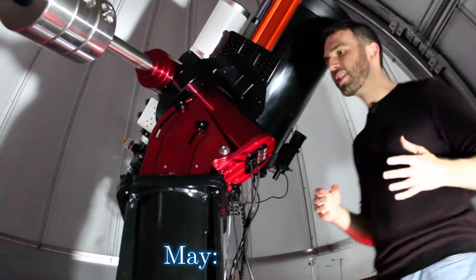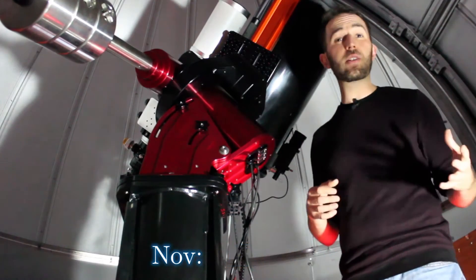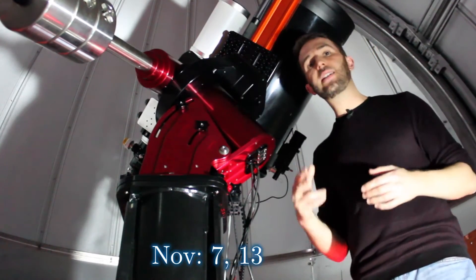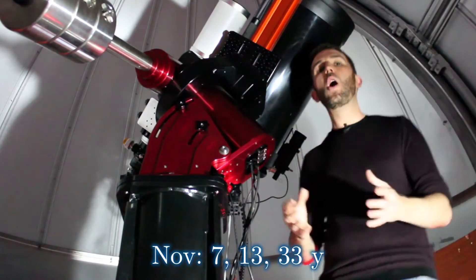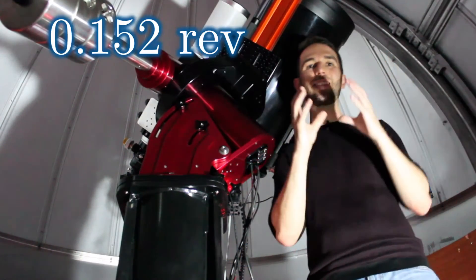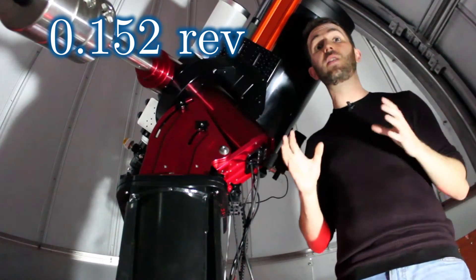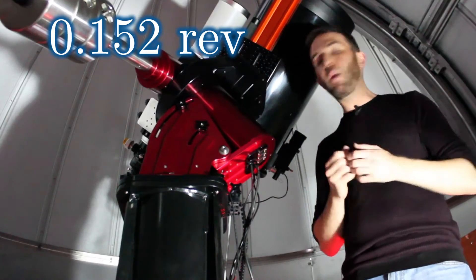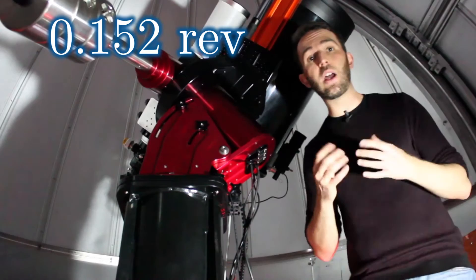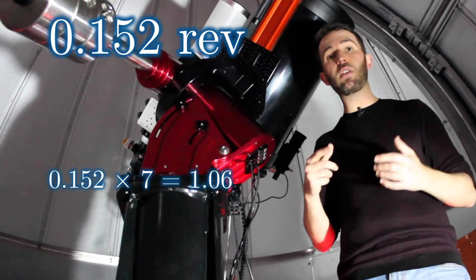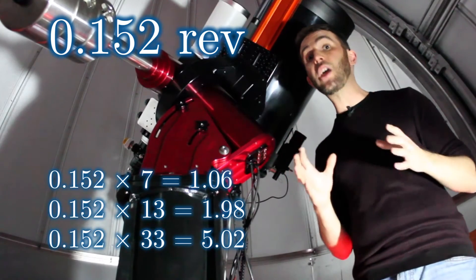For May transits there's a 13 and 33 year cycle, and for November transits a 7, 13, and 33 year cycle. Where do those numbers come from? Well, you take the offset, the slight amount of a revolution around the sun that Mercury moves from our point of view each year, and multiply it by some number to get something very close to being a whole number. It turns out that 7, 13, and 33 are just the numbers for Mercury's offset.